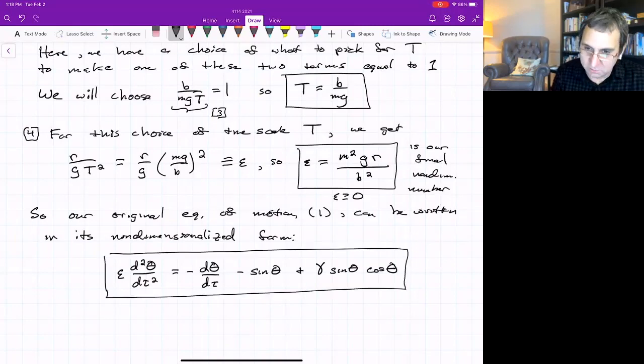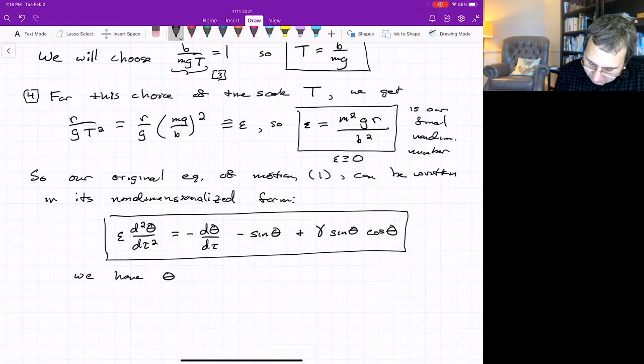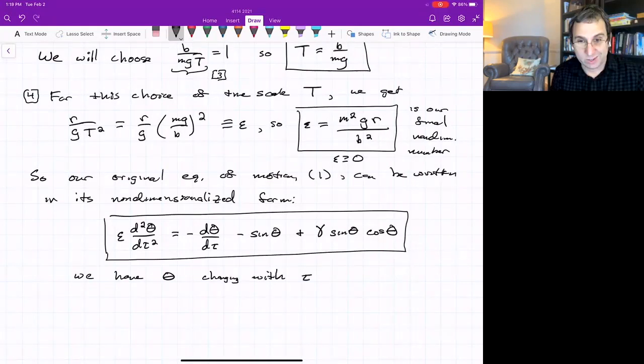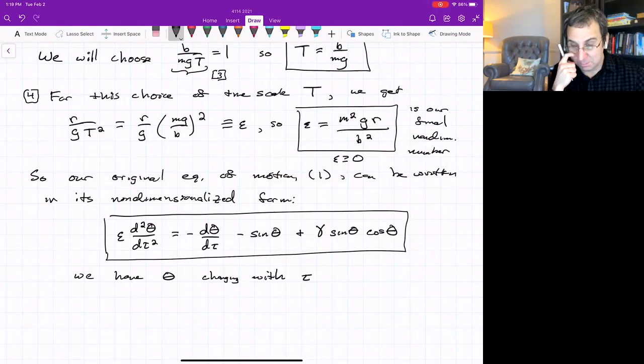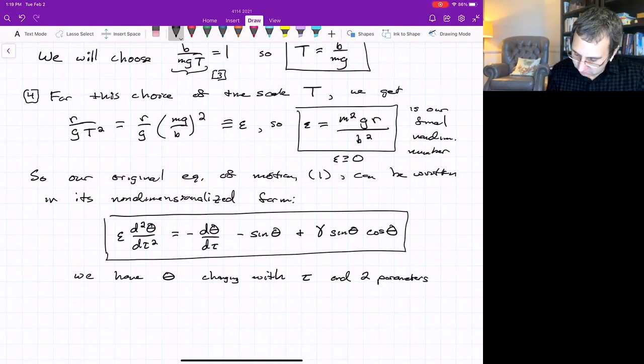What are we left with? We have theta changing with the non-dimensional time tau. So I'd say we have one dependent variable, theta, one independent variable, tau, and two parameters. Just two. Epsilon and gamma.